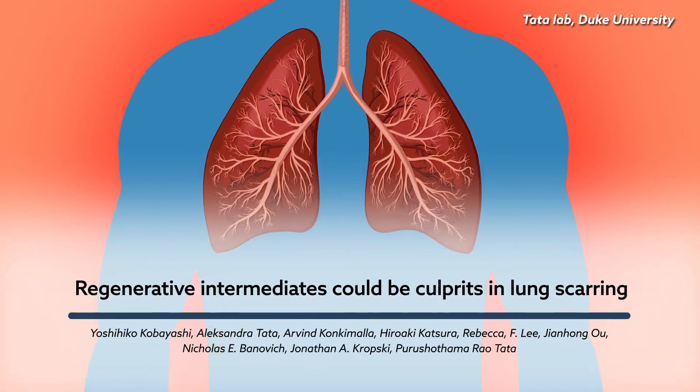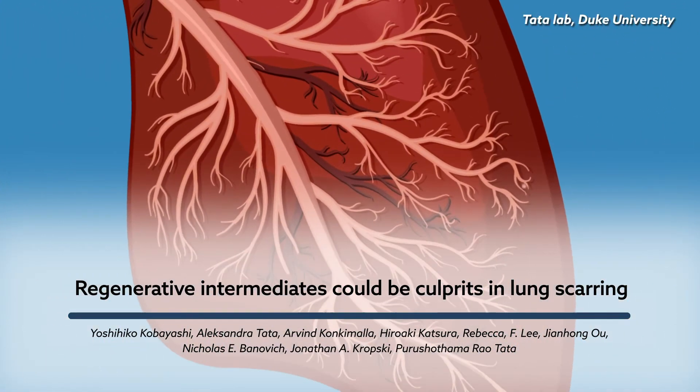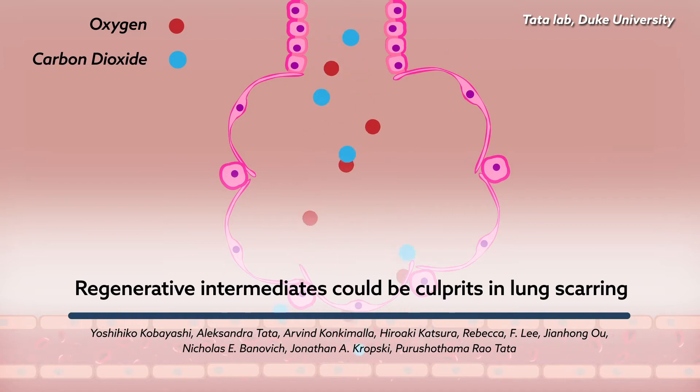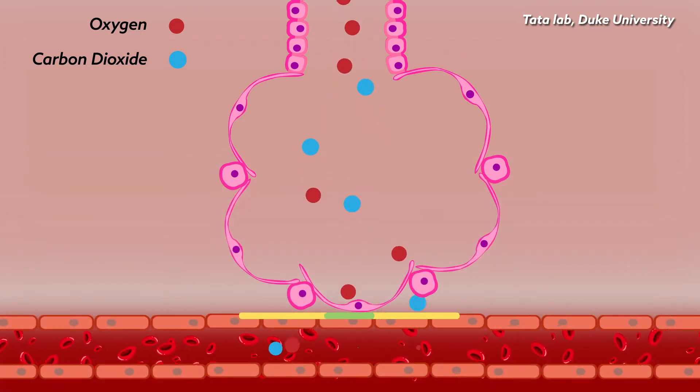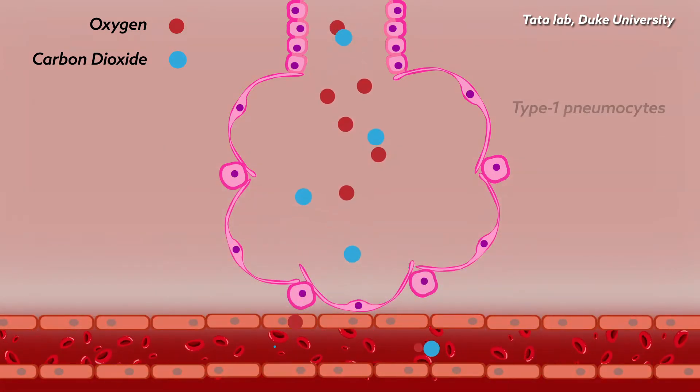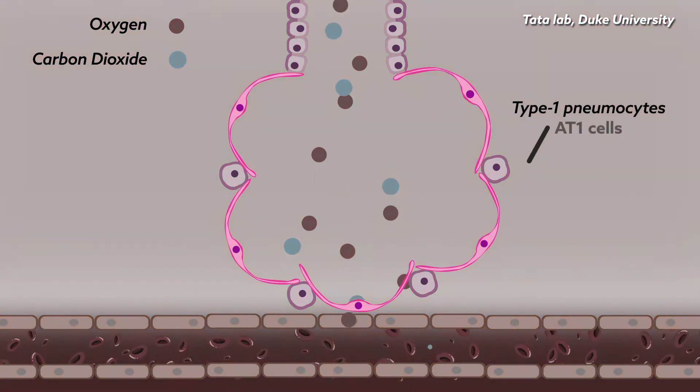Our lungs use very fine tissues to exchange oxygen and carbon dioxide between the air and our blood. About 95% of this tissue is made up of a single kind of cell, called type 1 pneumocytes, or AT1 cells.